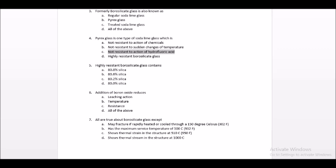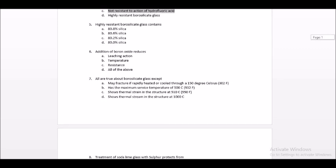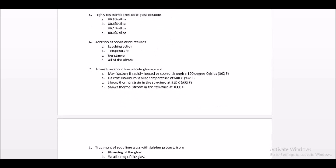Question number 5: Highly resistant borosilicate glass contains what percentage of boron oxide? The options are 80.8, 80.6, 80.2, and 80.0. The answer is 80.6.